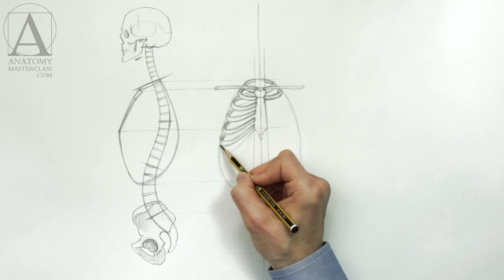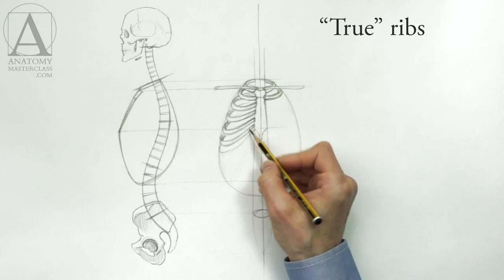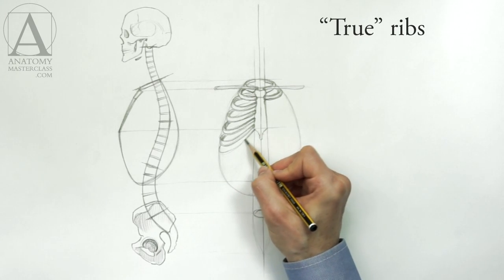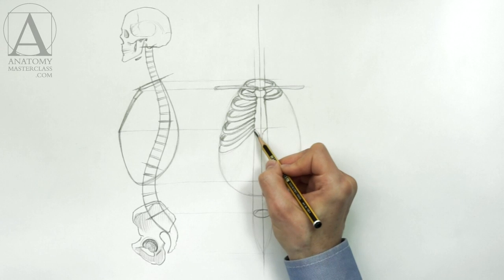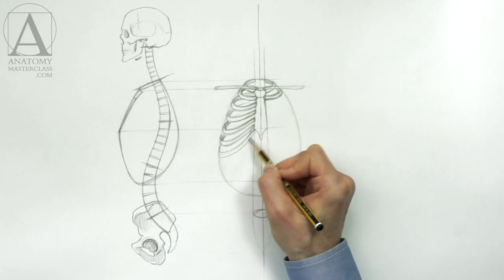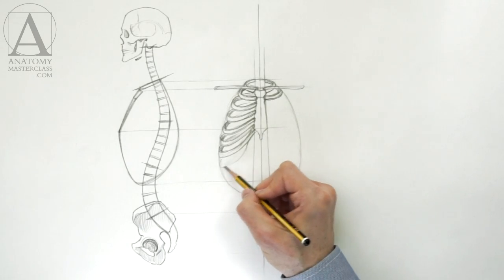The first seven pairs of ribs are called true ribs because they are connected to the breastbone. Every subsequent pair of ribs is wider than the previous one. That is why the rib cage becomes wider following an egg-shaped contour.